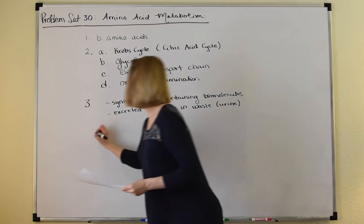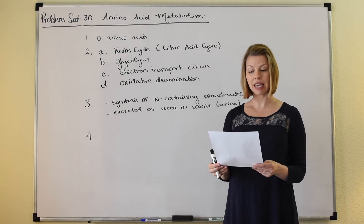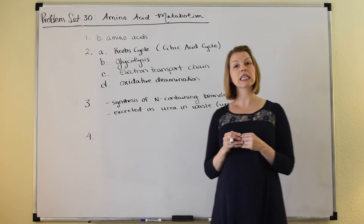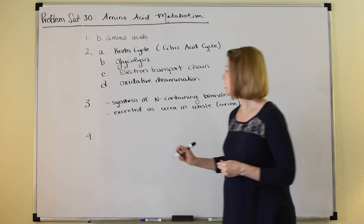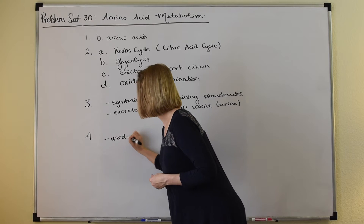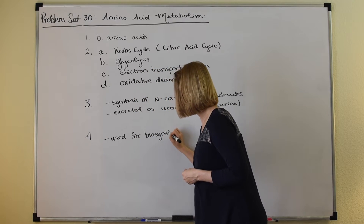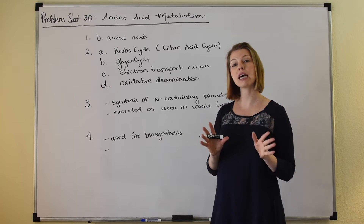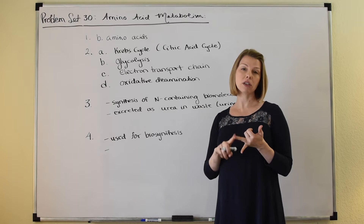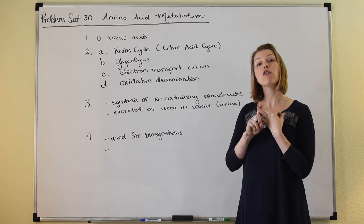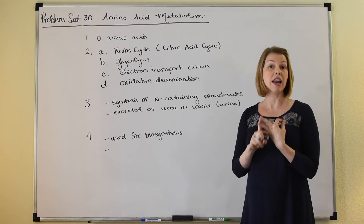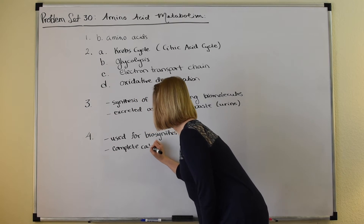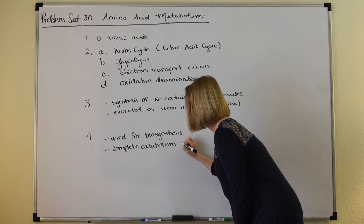Number four: what are the possible fates for the carbon skeleton of an amino acid during metabolism? The fate of the carbon skeleton is quite varied. It can be used for biosynthesis — for example, used to make nonessential amino acids. But that carbon skeleton can also be broken down into pyruvate, acetyl-coenzyme A, or different Krebs cycle intermediates, which means it can also be fully oxidized to carbon dioxide in the Krebs cycle and used for energy production for the synthesis of ATP — complete catabolism for energy.